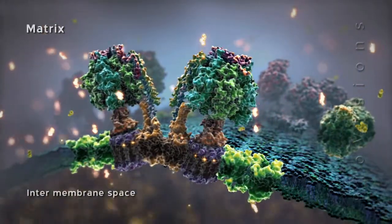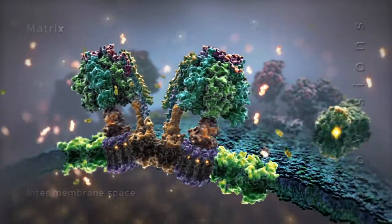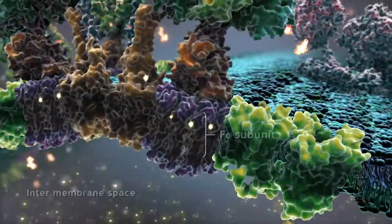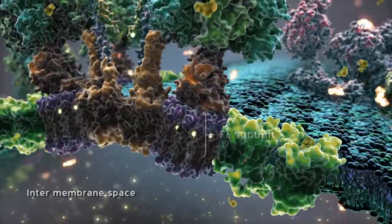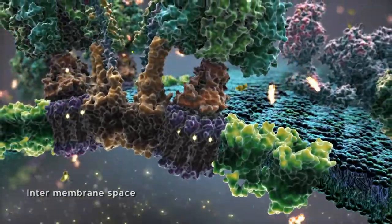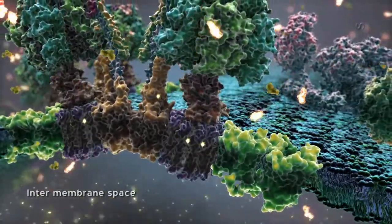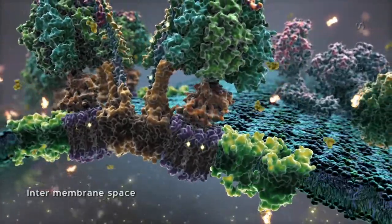Protons flow back into the matrix through a component of the ATP synthase called F0. The membrane-embedded ring structure of F0 binds protons in the intermembrane space and releases them on the other side of the inner membrane in the matrix.